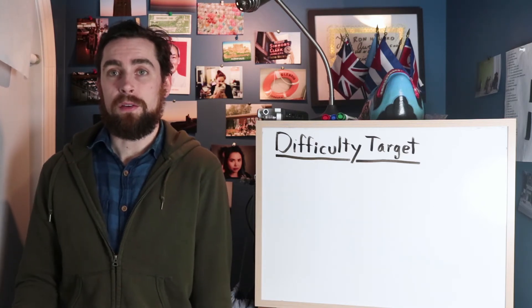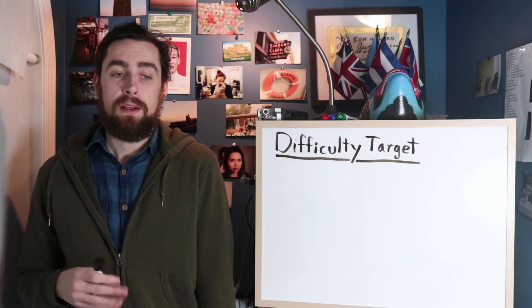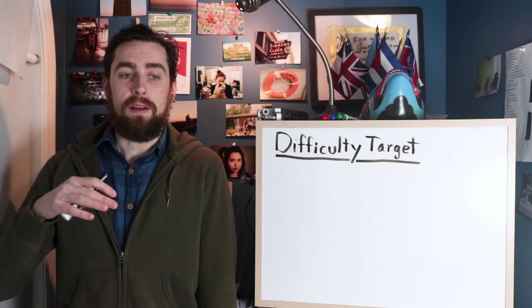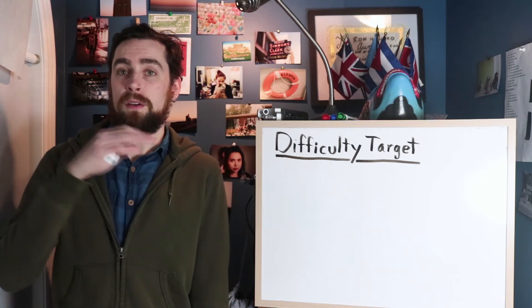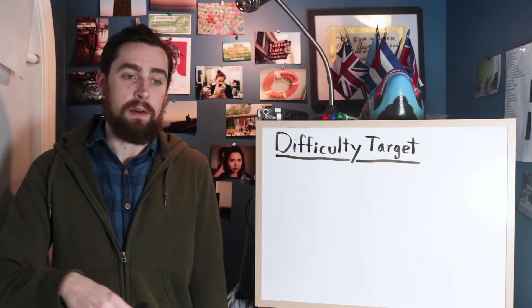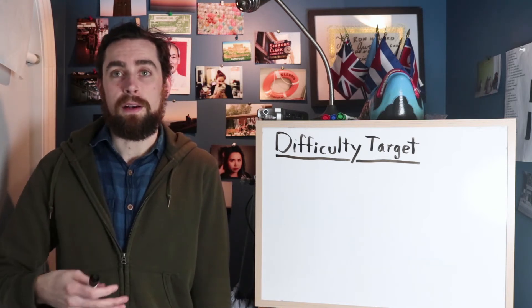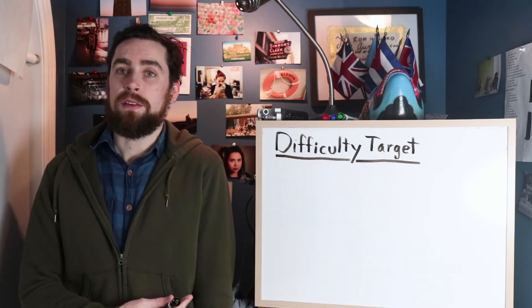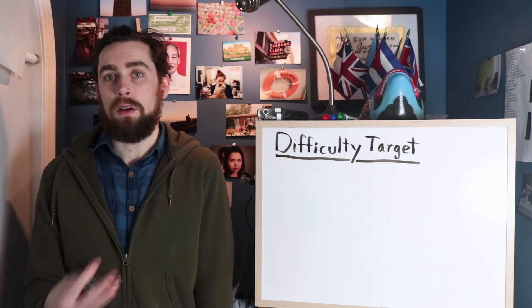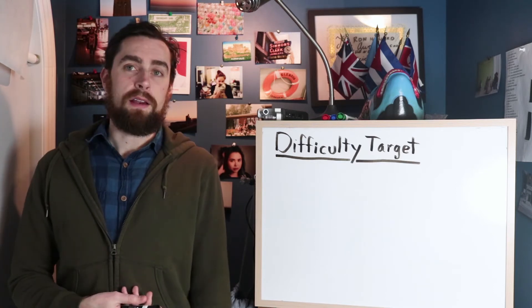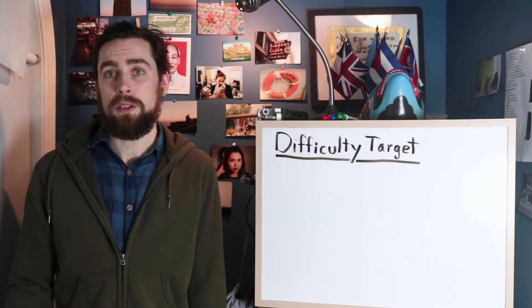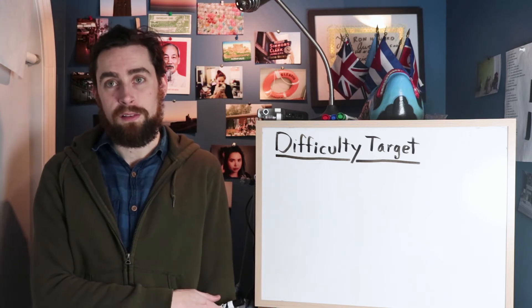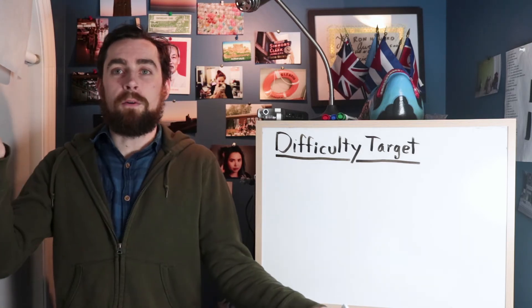If it took less than two weeks to mine those 2016 blocks, it will make the difficulty target higher, making the cryptographic puzzle more difficult so it takes longer for miners to mine Bitcoin. These calculations take place across all the nodes on the Bitcoin network, and every node comes to the same conclusion because they all have the same previous 2016 blocks — if they don't, Bitcoin is forked.